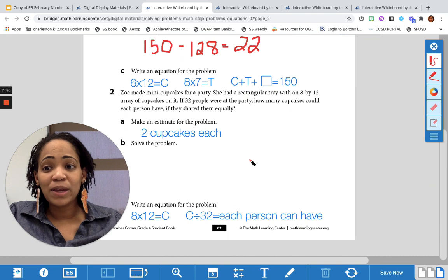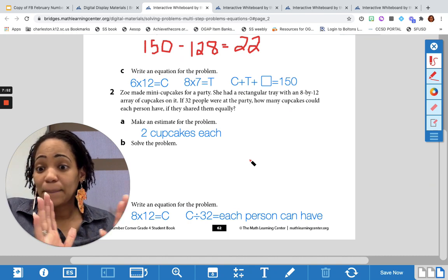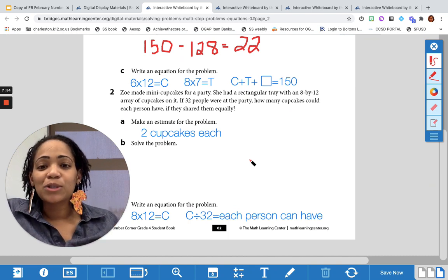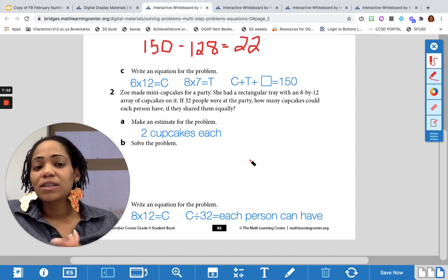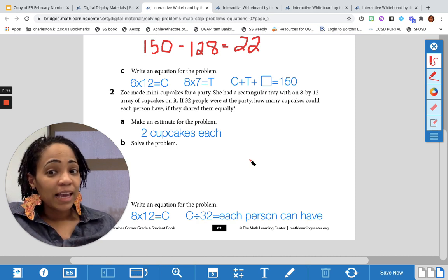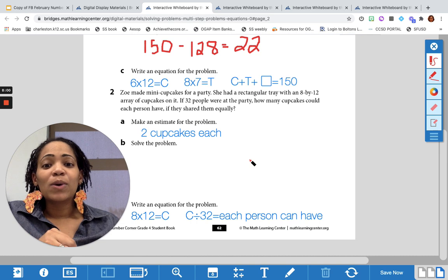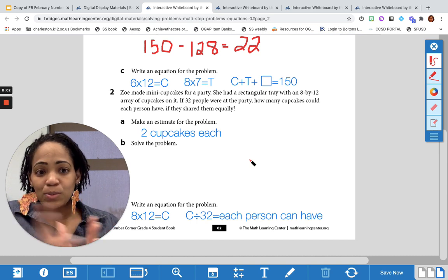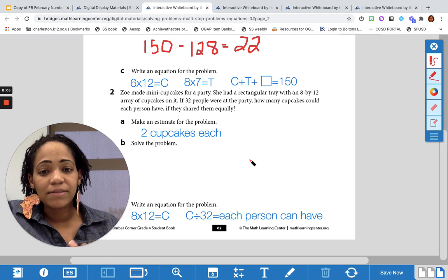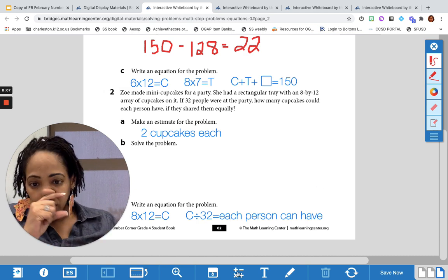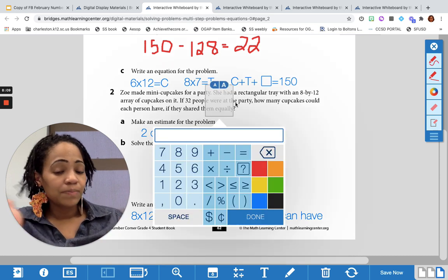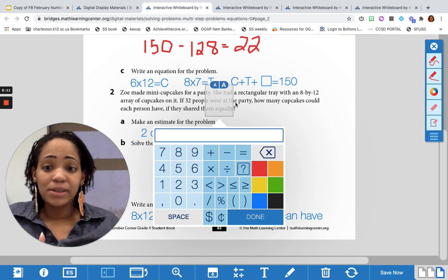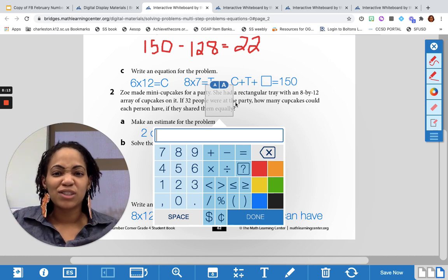So that's number one. Let's go over number two and then we will be done for today. All right, so Zoe has some cupcakes in a rectangular array of 8 by 12. She wants to serve them to 32 people who are at the party. How many cupcakes can each person have? So if you were to have written an equation for this problem, first, which probably is the best thing to do before you solve it so you actually know what you're doing.